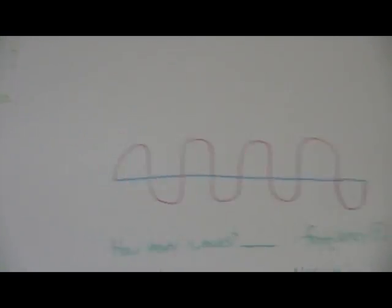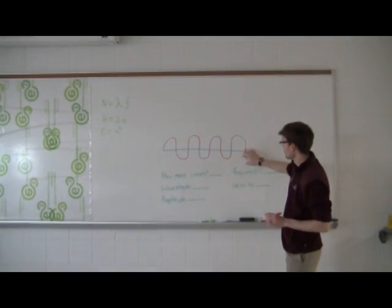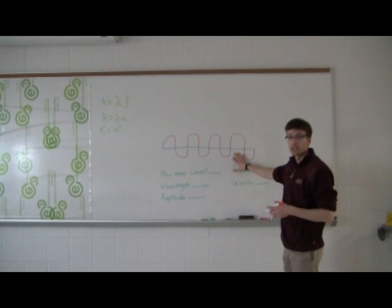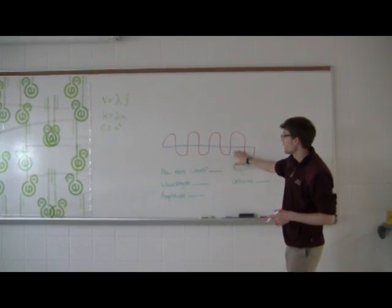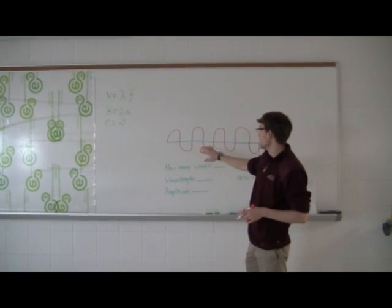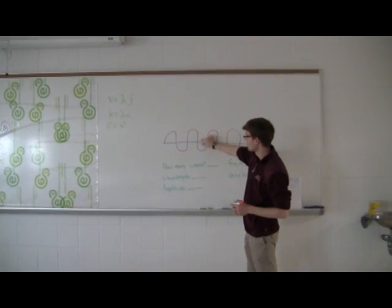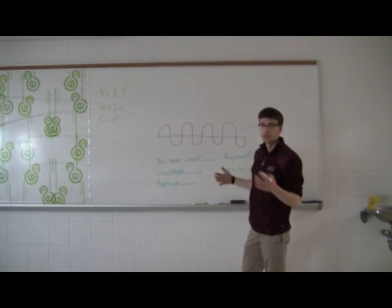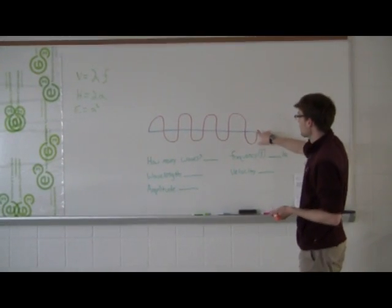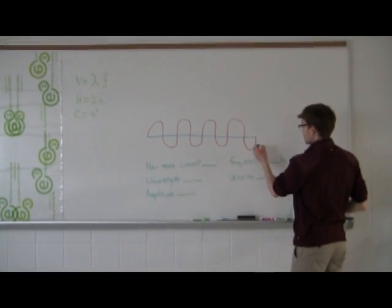So the first thing I'm going to tell you about is the rest. Usually whenever you see a diagram of a wave, which is called a wave train, it has a line running through the middle. If this was a perfect diagram, then the line would be perfectly straight and it would be right in the middle, but of course I'm not a perfect artist. So this line is called the rest.